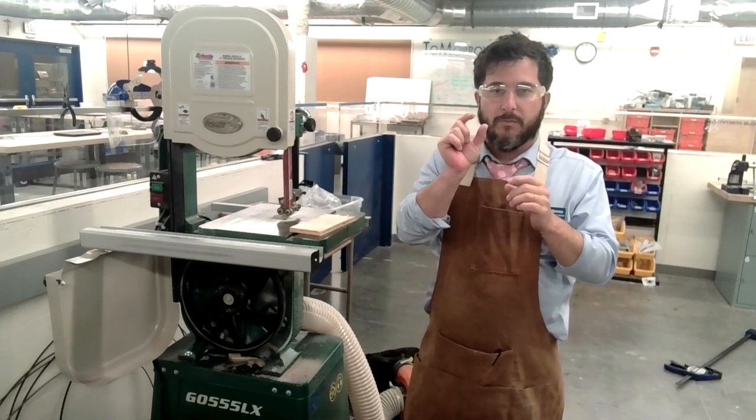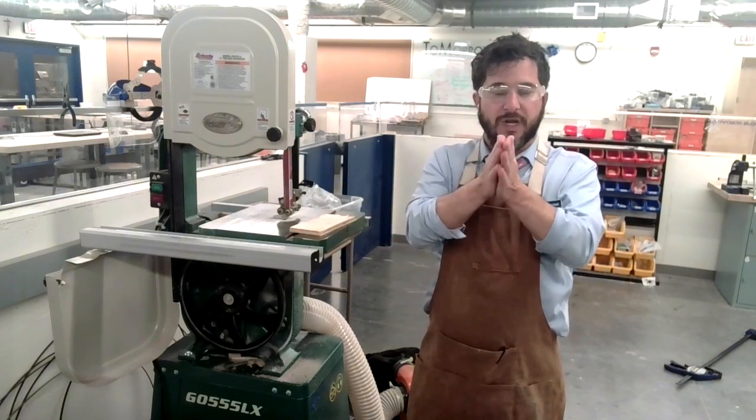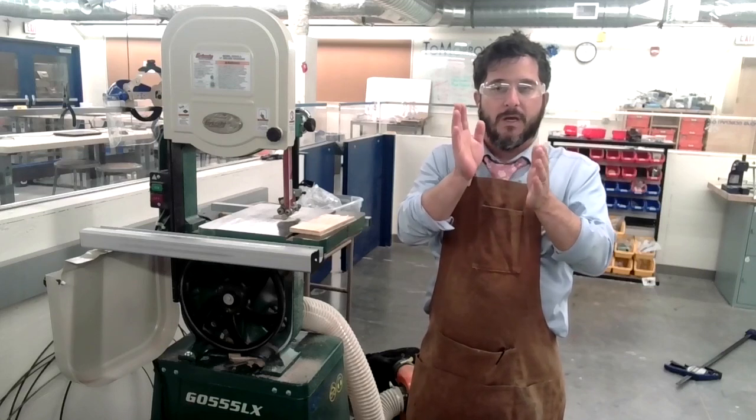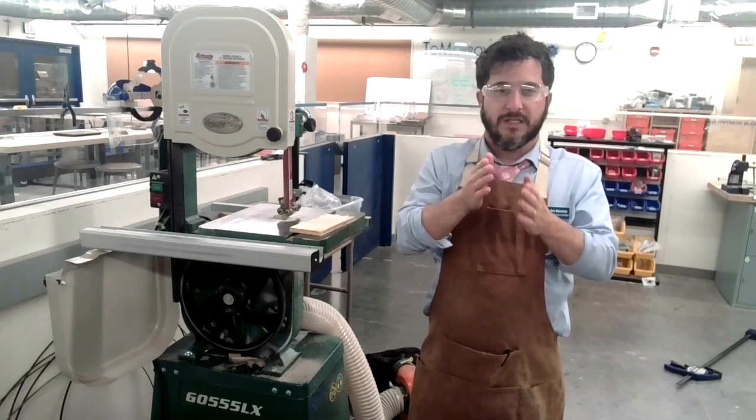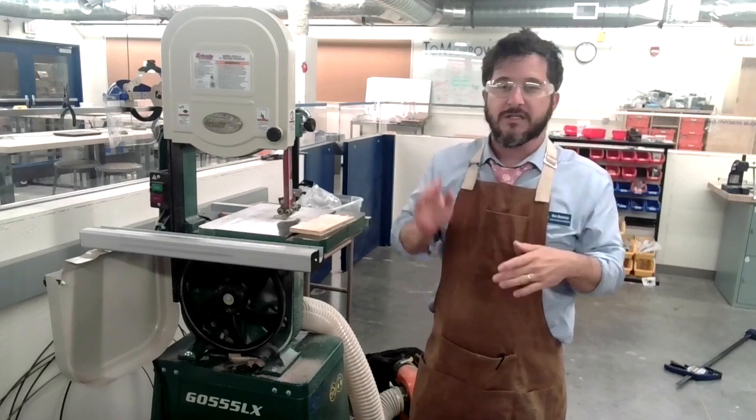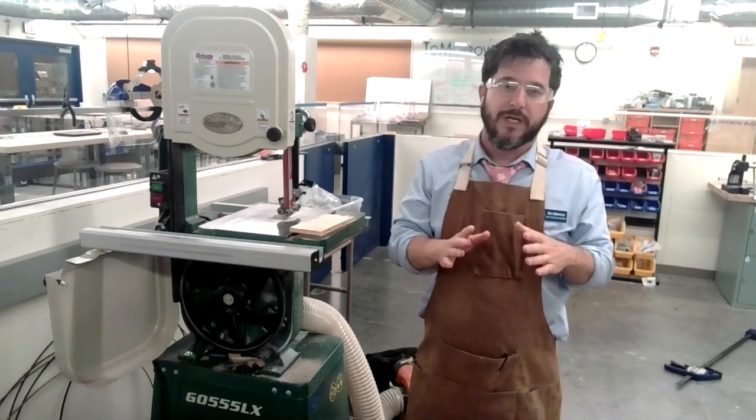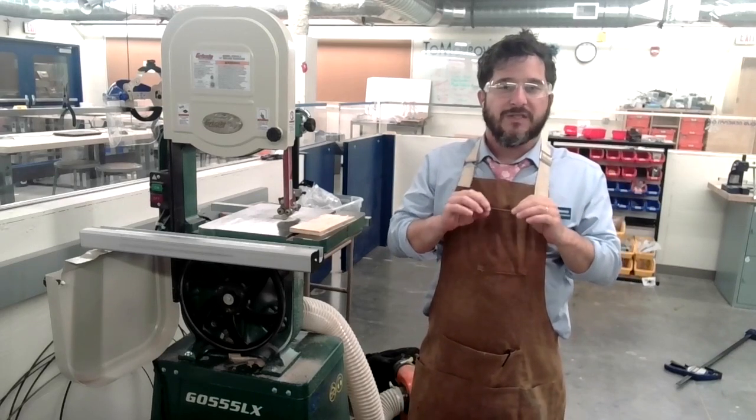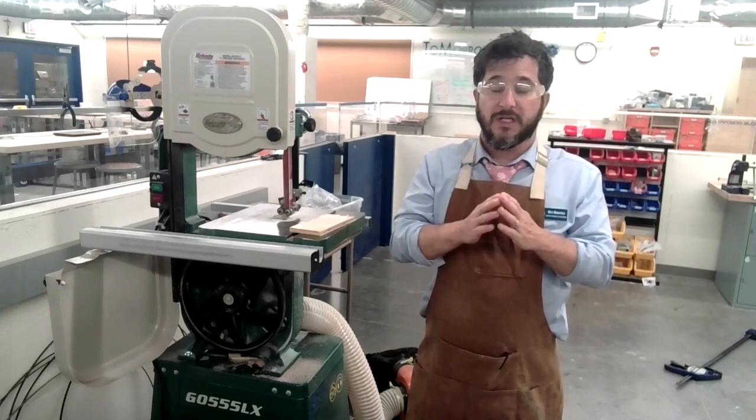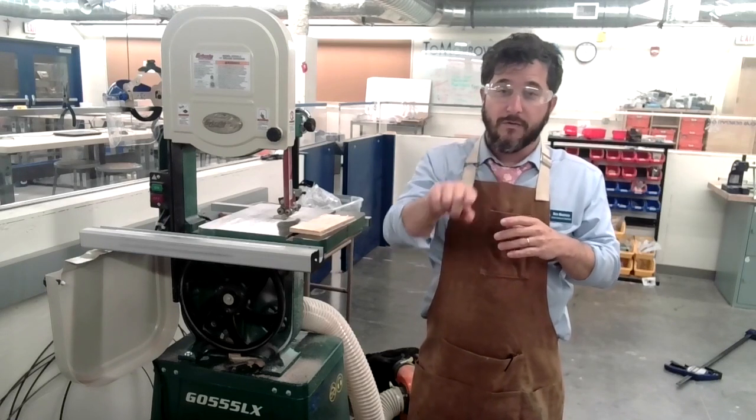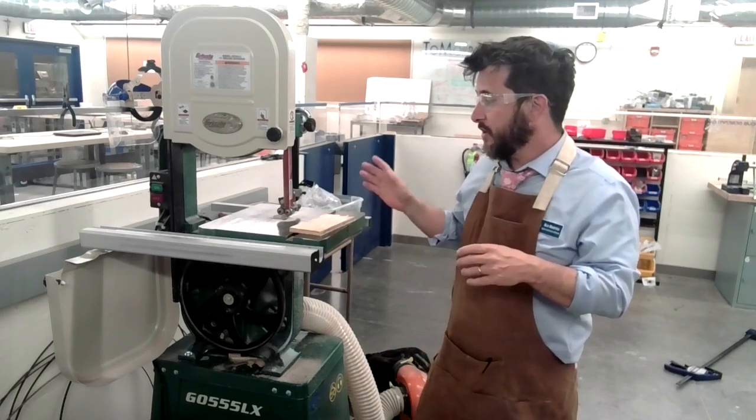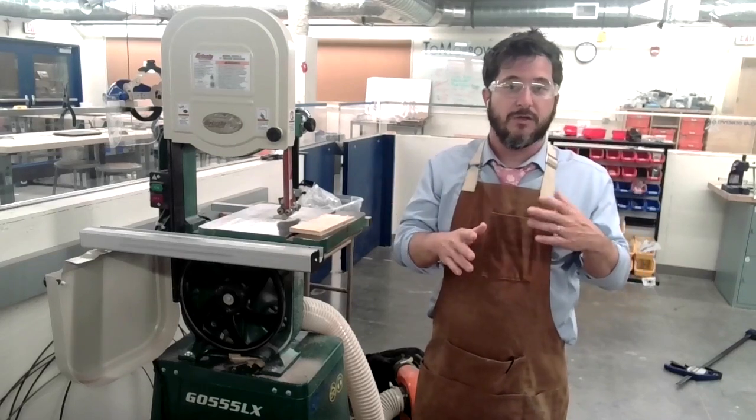So the wider the blade is, the straighter the cut's going to be. But the smaller the blade is, the more you can turn it. So a bandsaw is really good for making quick cuts. It's not the best for making perfectly straight cuts, but it is excellent for making curved shapes. So I'm going to show you how to set up the saw, and then I'm going to do a quick little cut.